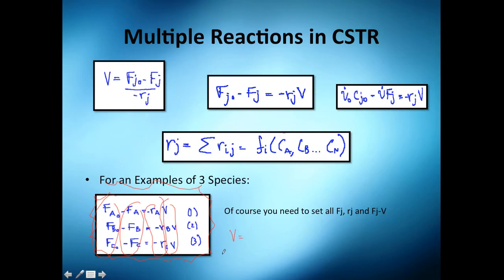Of course, you will need to set values here, volumes here, or you will need to set a flow rate because you have this relationship. As you see, you have three equations and you have three variables: F_A, F_B, F_C, and volume. But volume needs to be set. You're going to say, okay, how much flow rate am I going to get with 10 cubic meters? So you set volume.